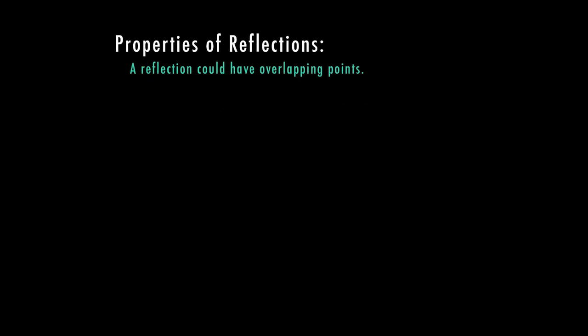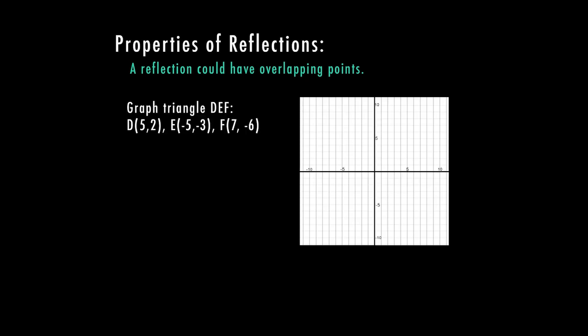A reflection could have overlapping points. Let's look at what happens when we label these points and move them on the graph according to a reflection. I have triangle DEF: D is at (5, 2), E is at (−5, −3), and F is at (7, −6). I've connected the points to form my triangle.